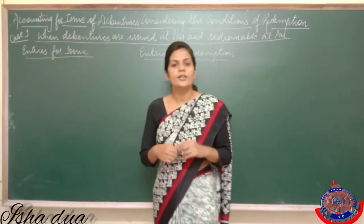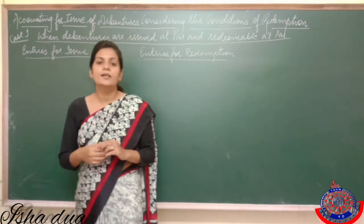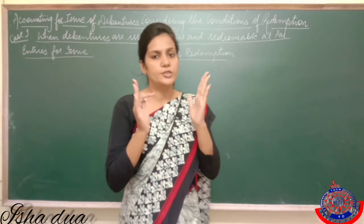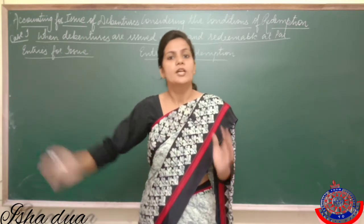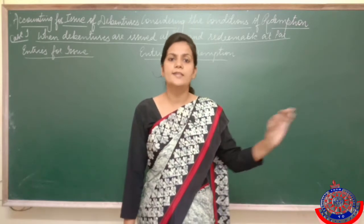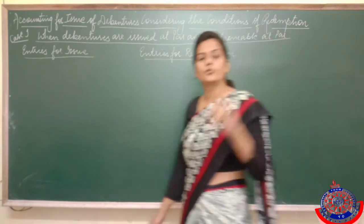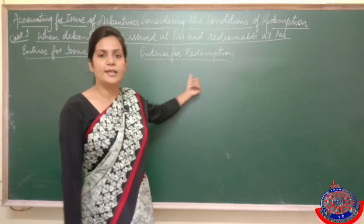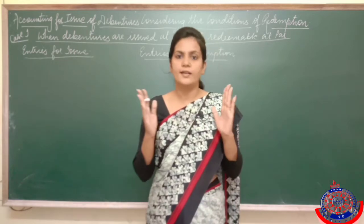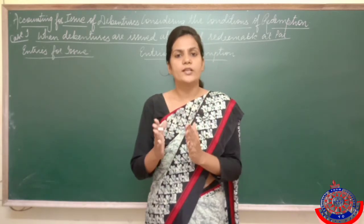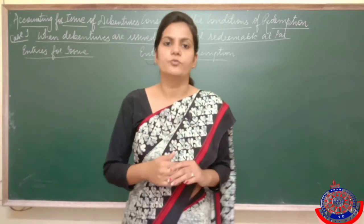There are six cases and we are going to discuss all six today. Solving the question here simply means you have to pass the journal entry from the given data — entries of issue, keeping in mind the conditions of redemption. You don't have to pass the entry of redemption unless it is told. But I am going to explain both. In the question, data on terms and conditions of issue and redemption will be given, and keeping in mind the terms of redemption, you have to pass entries for the issue.